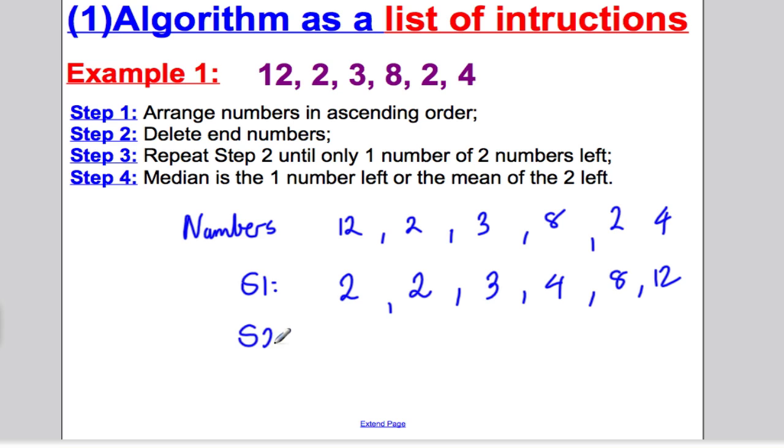Step one, arrange them in ascending order: 2, 2, 3, 4, 8, and 12. Then for step two, you delete the end numbers. So I'm just left with 2, 3, 4, and 8. Step three, I repeat step two until I only have two numbers left or one number. So I would have 3 and 4 left over. And step four, the median is the one number left or the mean of the other two. The mean of 3 and 4 is 3.5. This was an algorithm to find the median of a list of numbers.